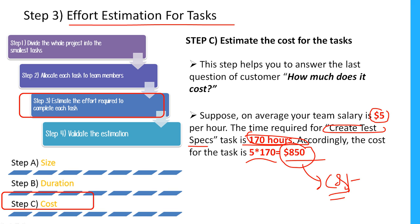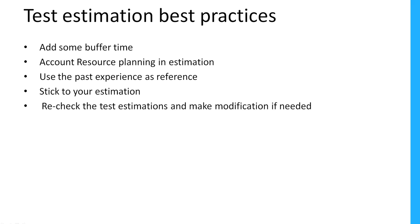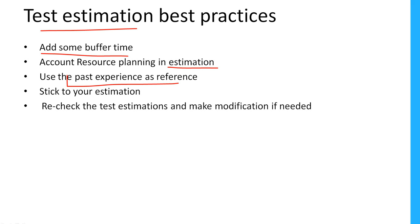There are also best practices to follow when doing estimation. Add some buffer time, because we cannot always predict conditions and situations. Account for resource planning in estimation. Use past experience as a reference — this helps a lot. Stick to your estimation once it's done. Recheck the test estimations two or three times and make modifications if needed. These are the test estimation best practices.